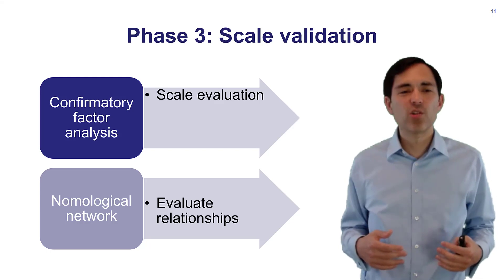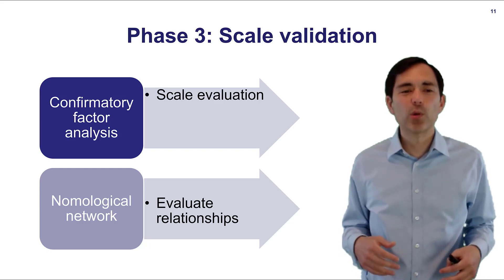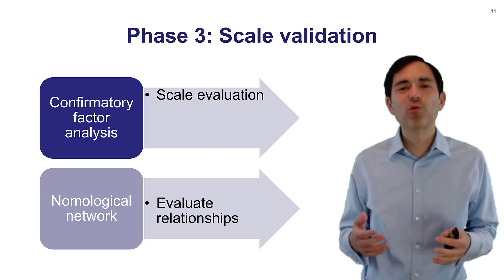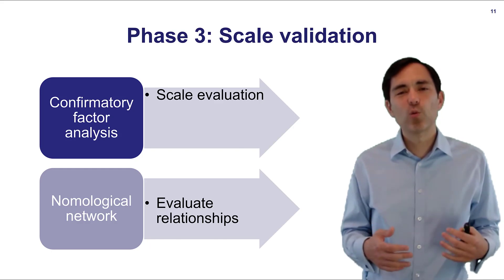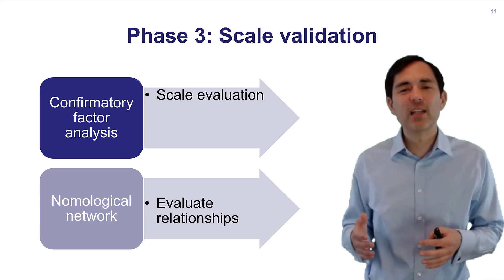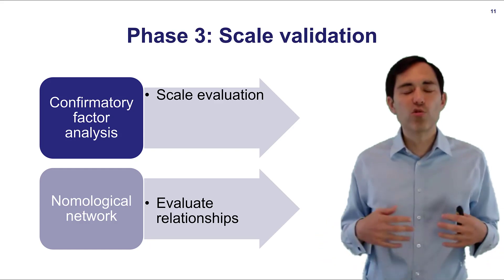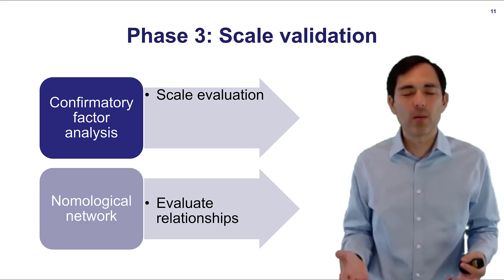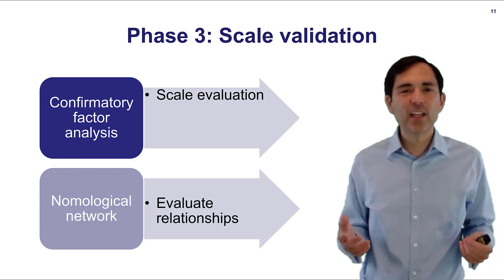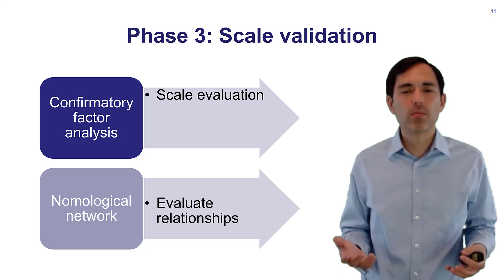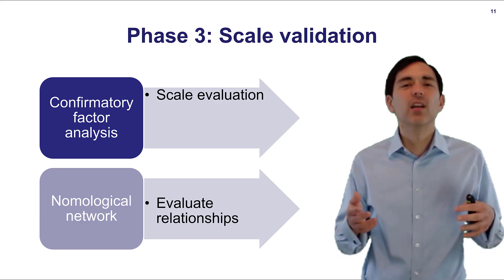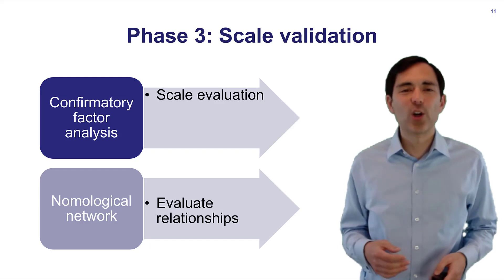In phase three in addition to scale evaluation through confirmatory factor analysis you would like to establish a nomological network so that your new scale should be related to certain variables that we would expect and they should be unrelated with some other variables. To do so you would usually collect another sample maybe pilot study three where you include related and unrelated variables. Then maybe you would run correlations or other tests to show overlap and non-overlap with those variables.